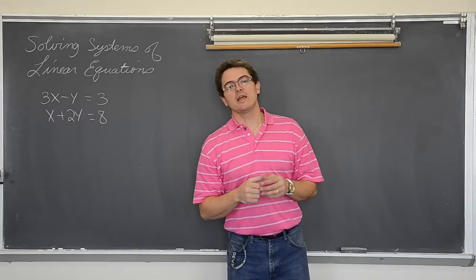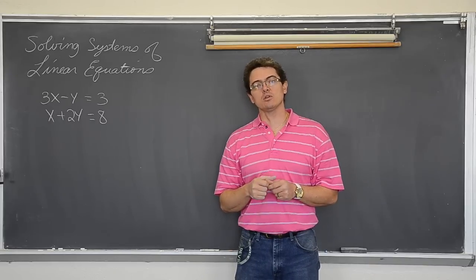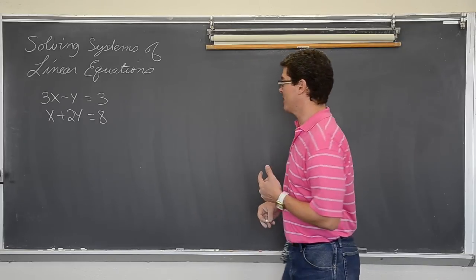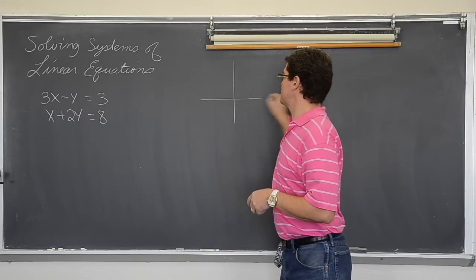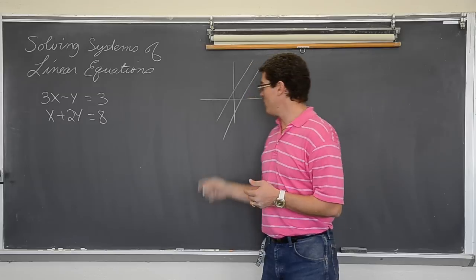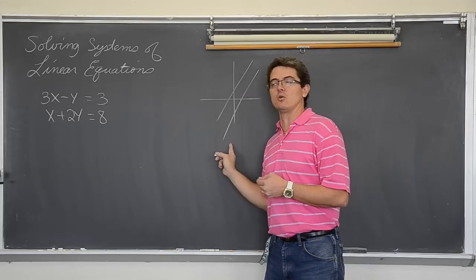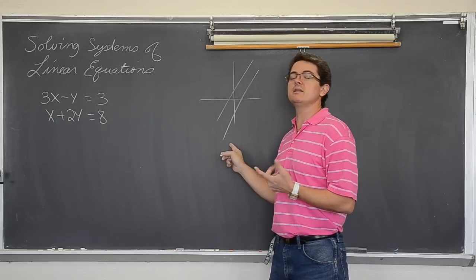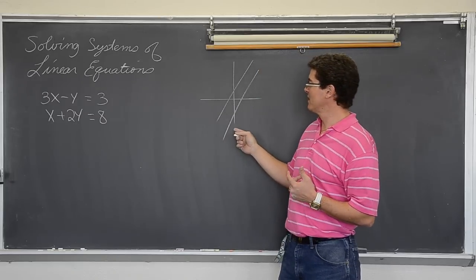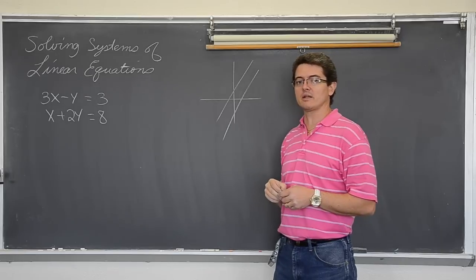When you solve a linear system of equations, you are looking for where two lines cross. There are three situations. You can have two lines that never cross because they are parallel. That is no solutions, which is a term our new textbooks use, when they are parallel and don't cross.